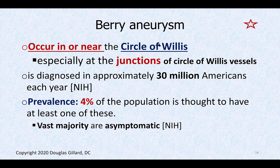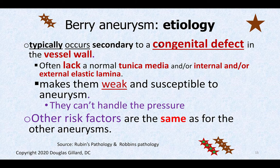Berry aneurysms occur in the circle of Willis, or at least near it, usually at the junctions. About 30 million Americans come down with a symptomatic one per year. Four percent of the population has one of these — most are asymptomatic and don't know they have them. These are considered congenital defects of the arterial wall of the members of the circle of Willis. If it occurs near the circle of Willis, it's still called a berry aneurysm.